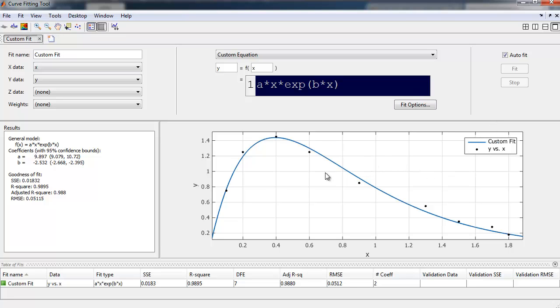And so, boy, that's all there is to it with MATLAB. So we are getting our a coefficient is 9.897. Our b coefficient is minus 2.532. We also get 95% confident bounds on those estimates. And that's all there is to it.